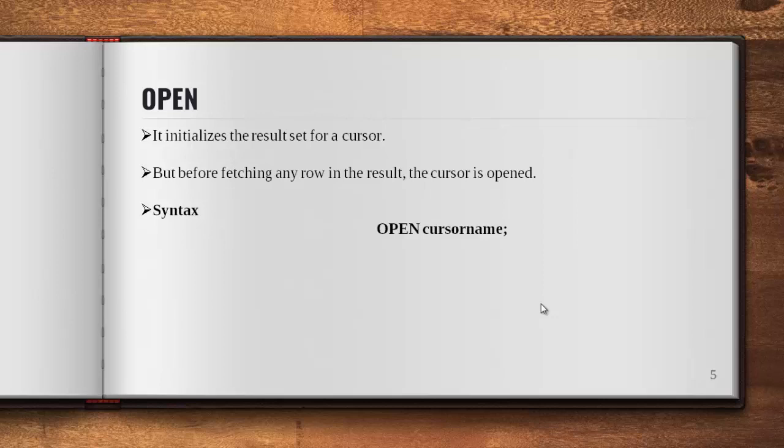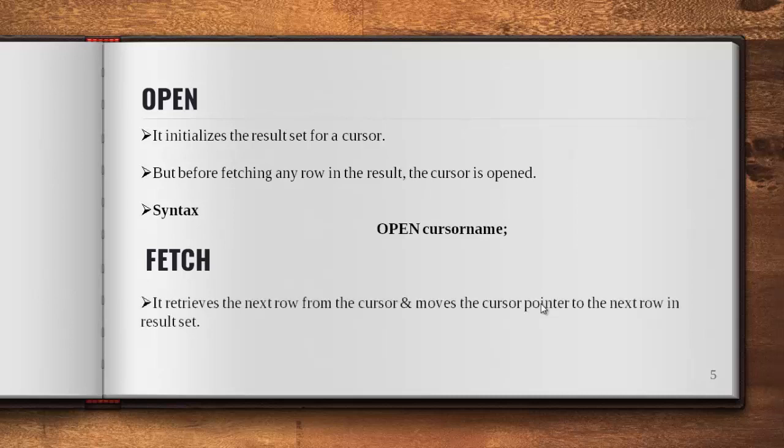After OPEN, the next command is FETCH, which retrieves the next row from the cursor. The cursor points to every row in the table and fetches it out to display as a result. The syntax is: FETCH cursor_name INTO variable_list.